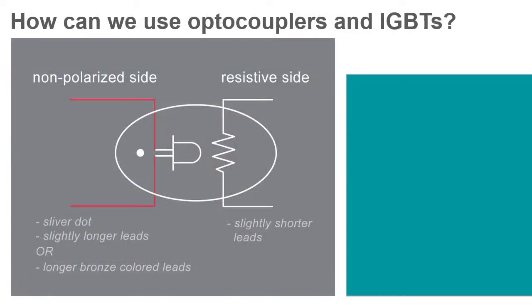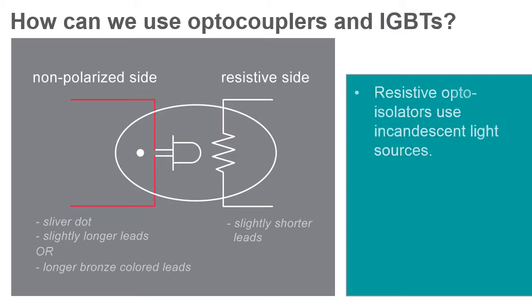There are quite a few different types of optocouplers available today. Resistive optoisolators are the earliest type, originally marketed as light cells in the 1960s. These used miniature incandescent light bulbs as their light sources and light-dependent resistors as receivers. Although this style of optocoupler has very limited switching speed, they're still used in the audio and music industry.